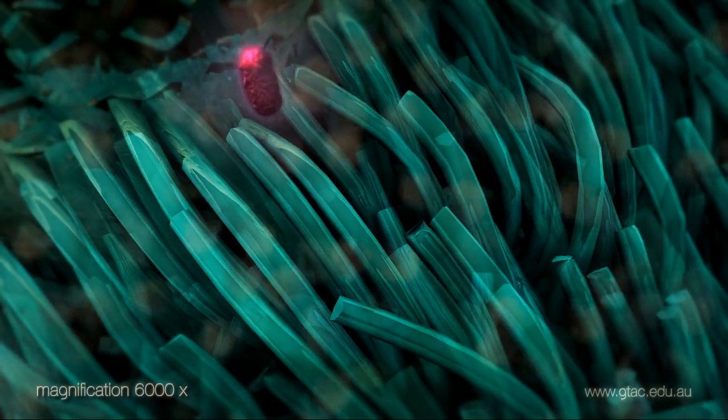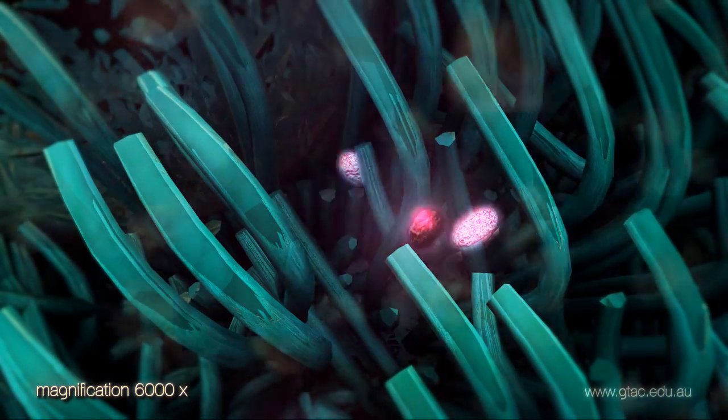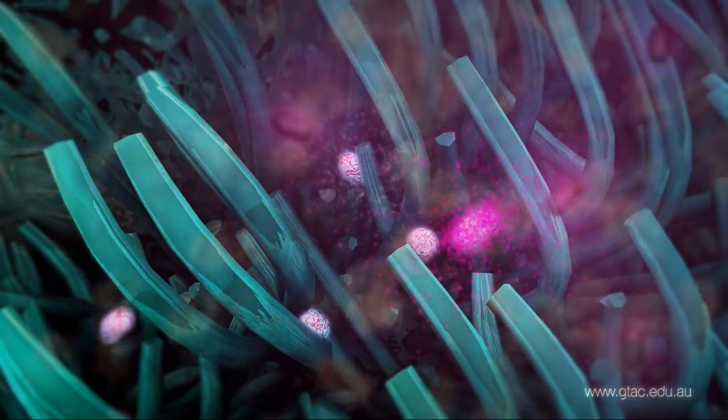The pertussis bacteria infiltrate this barrier and attach to the cilia. The bacteria secrete toxins into the area.